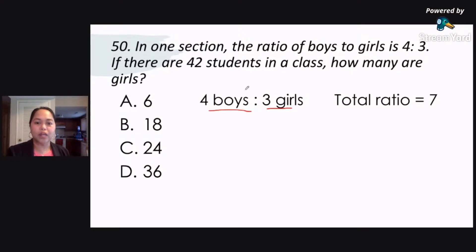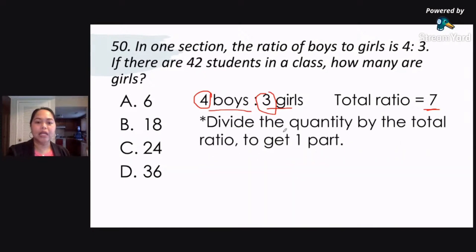What you do is you get the total ratio. How do you get the total ratio? You add lamang po itong ratio natin na 4 is to 3. Okay, so 4 is to 3. That gives us 7. Okay, so that's the total ratio.